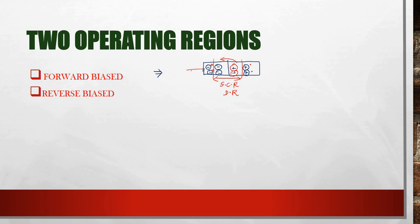These are the basics of the PN junction diode. Now we can see the forward bias operation. In forward bias, the P type material is connected to the positive terminal of the battery and N type material is connected to the negative terminal. P consists of majority carriers as holes, and these holes are repelled by the positive charge of the battery.